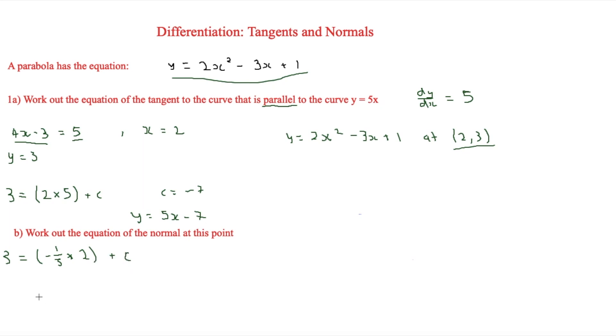So if we're rearranging this, then we know that c is equal to 3 plus 2/5, which we also know is going to be 17 over 5.